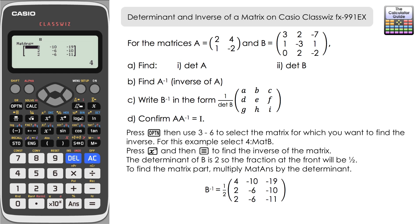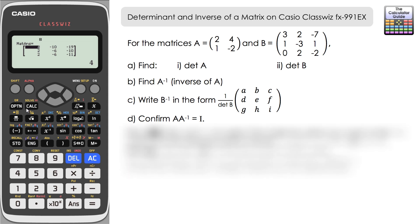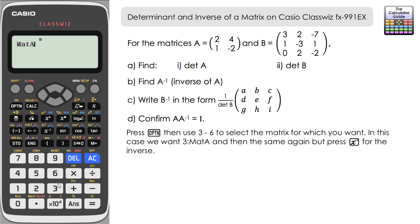And lastly, confirm that A multiplied by its inverse is I. Let's give this a go. So it's matrix A and then matrix A to the minus one. Press equals and here we have the two by two identity matrix, so that has been confirmed.